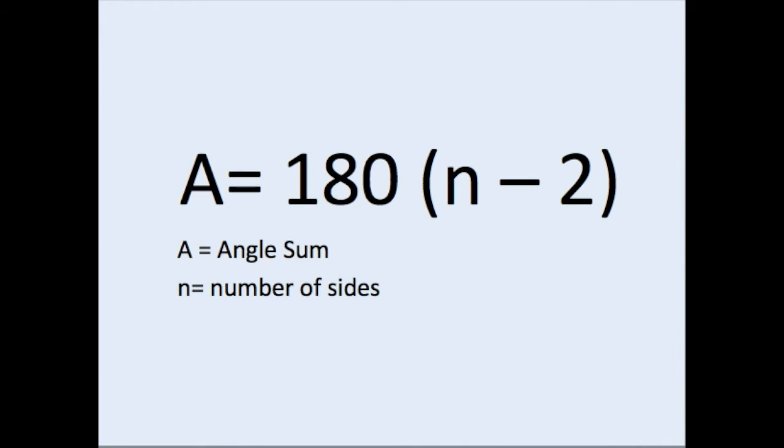So in order to find angle sum, we're going to use the formula A equals 180 times n minus 2. Note when a number is by parentheses, that lets us know that we need to apply multiplication. In this formula A equals 180 times n minus 2, A stands for the angle sum and n stands for the number of sides.